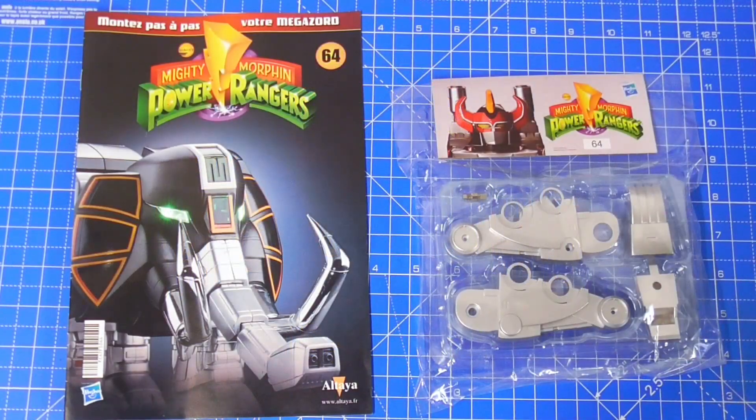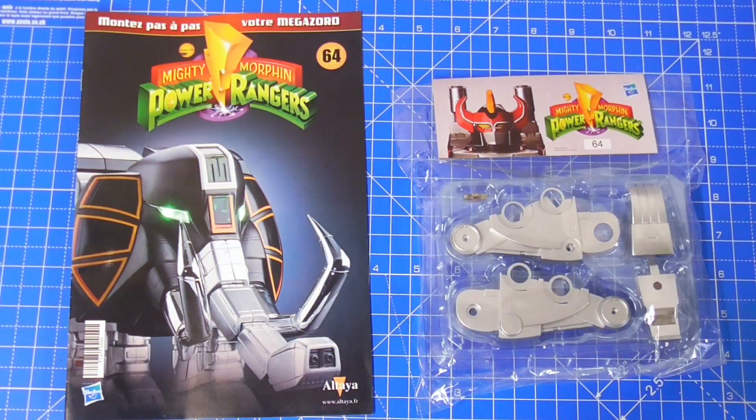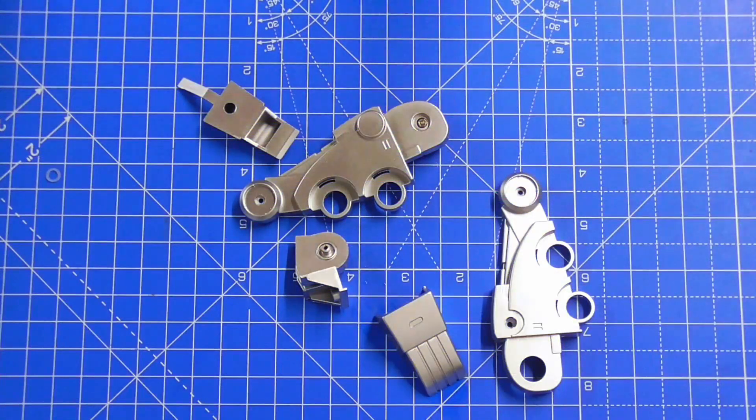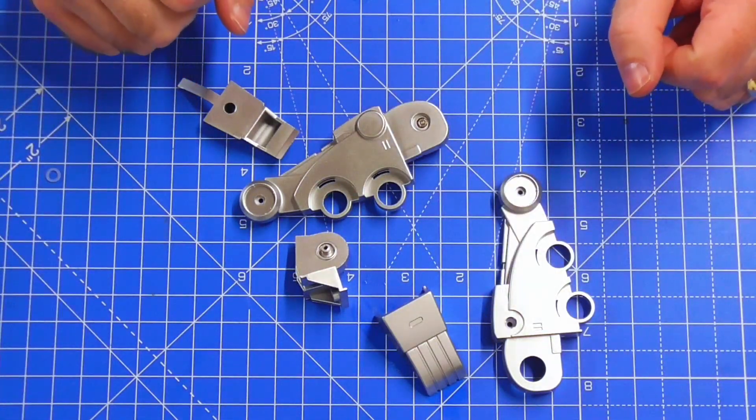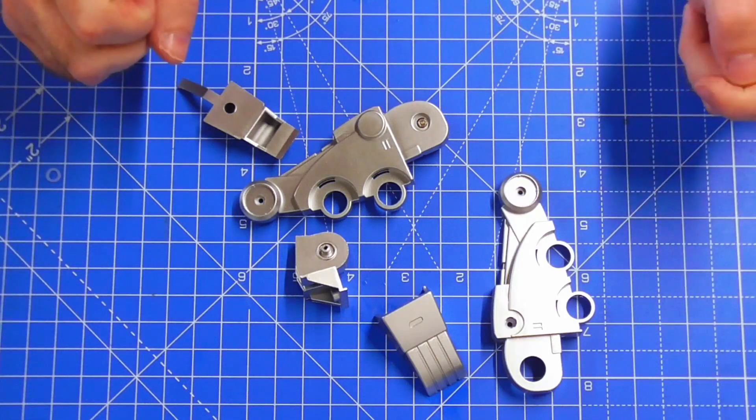Hello and welcome to the next episode of Build the Megazord where we're looking at issue 64 this time and continuing with the Sabertooth Tiger. It's quite a short video this week because we are starting work on the hind leg but it's quite an easy issue to do so it will take less time than normal.